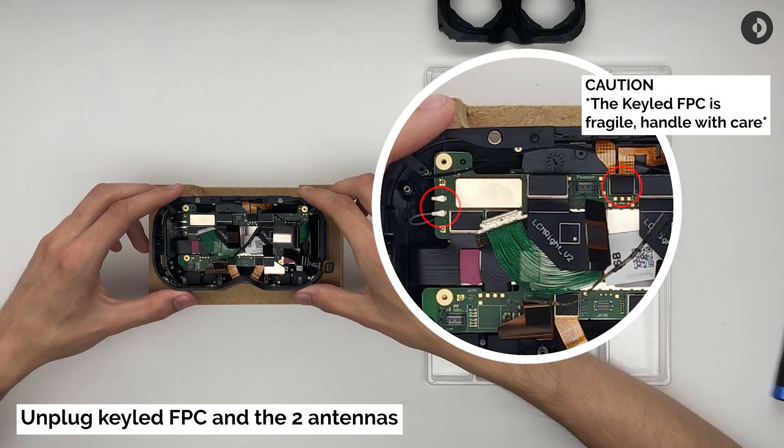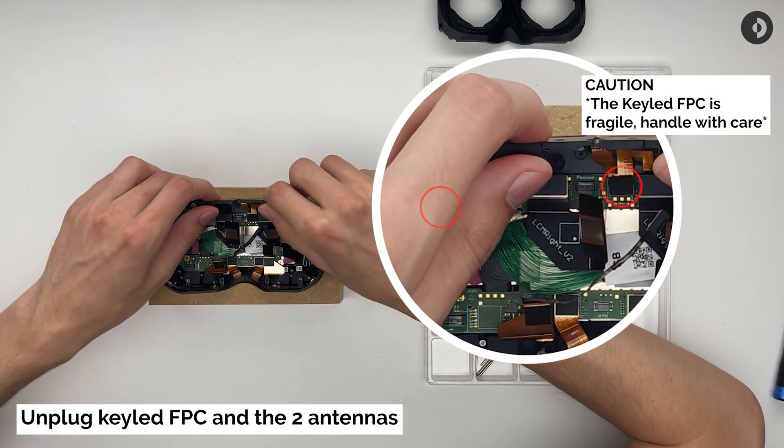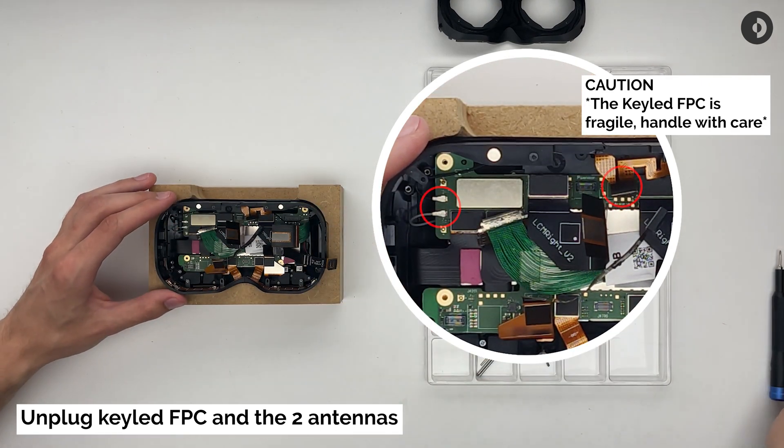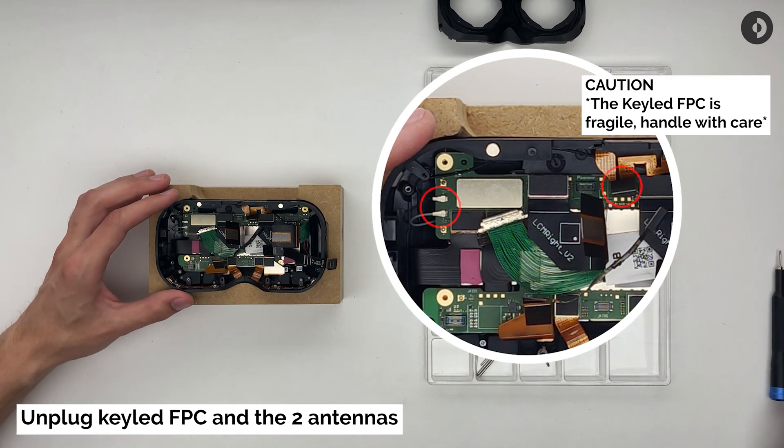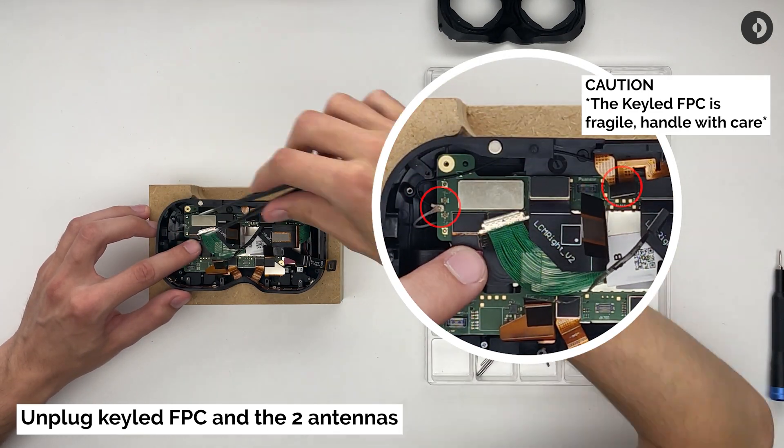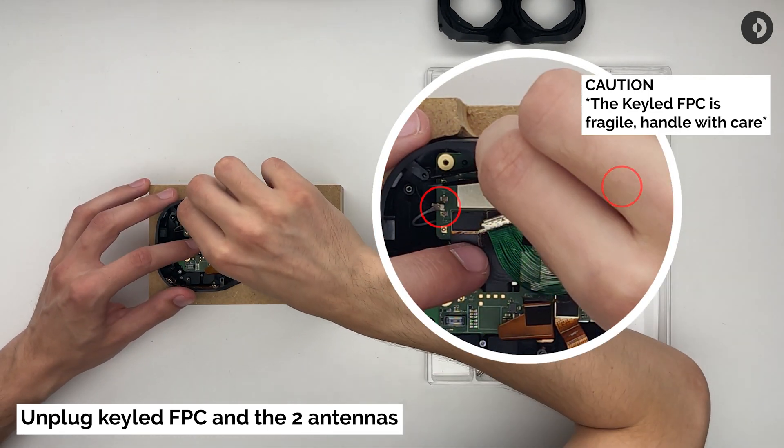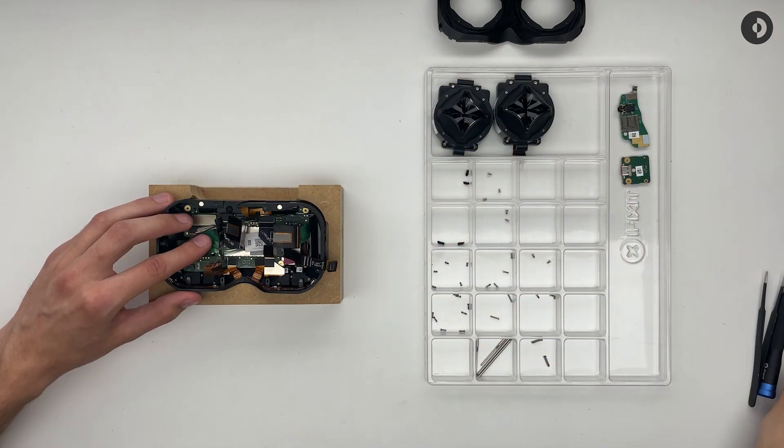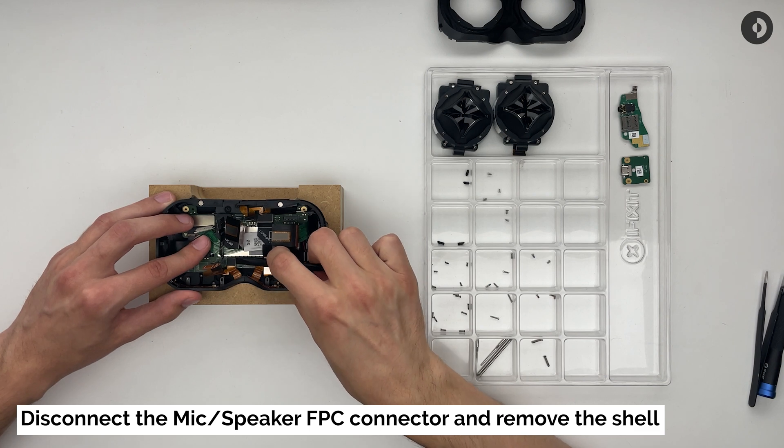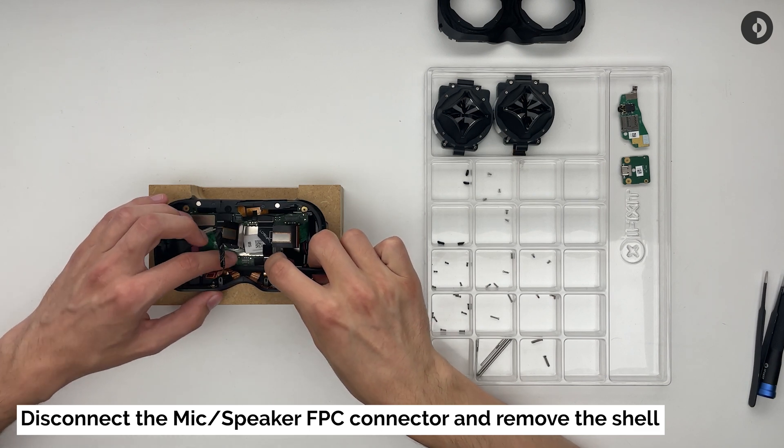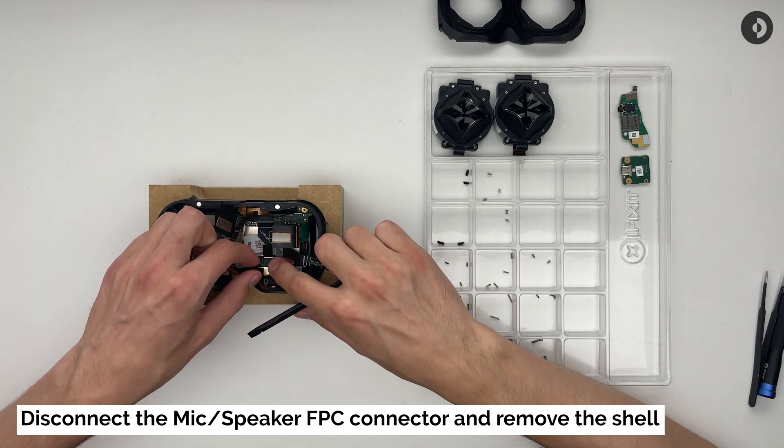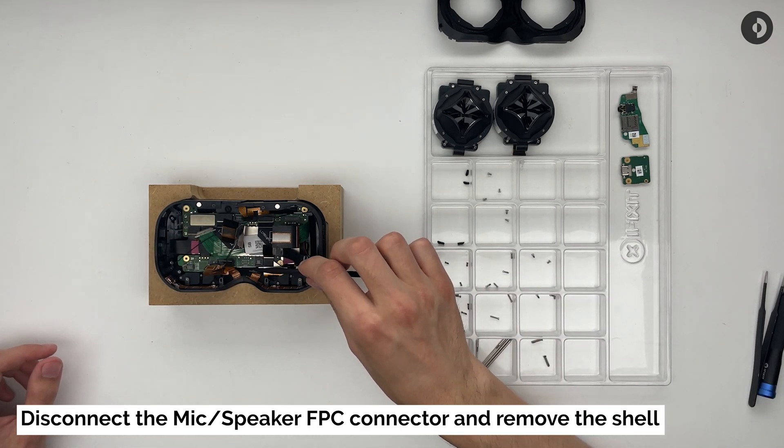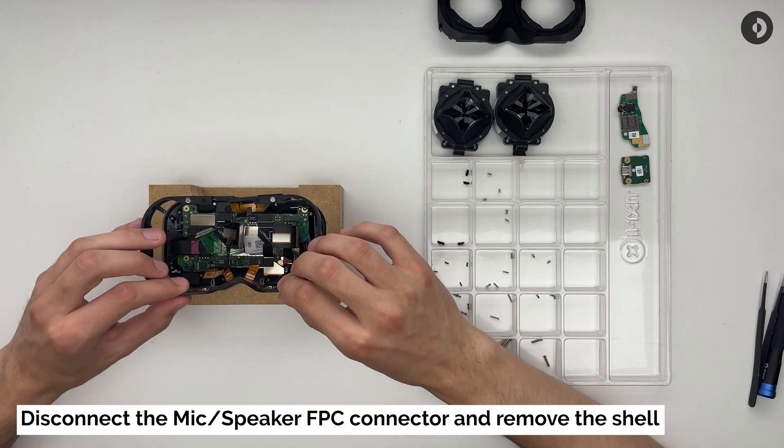There are three steps remaining before being able to remove the outer shells. First, disconnect the key LED FPC at the very top. Then, disconnect both antenna cables. And finally, lever both central FPCs from the board. You are now free to remove the shells.